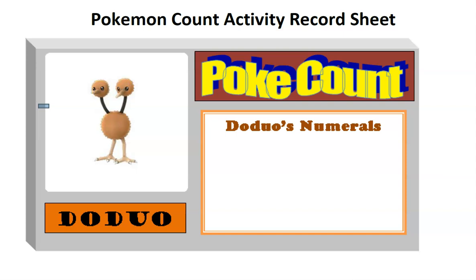This is a Doduo and it will count on its two heads, so it is going to count in base 2. If it is going to count in base 2, the only numerals that it will know is 0 and 1. Just two numerals.